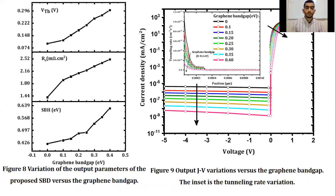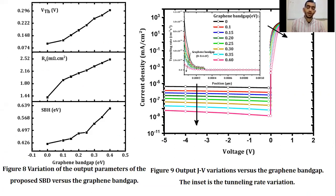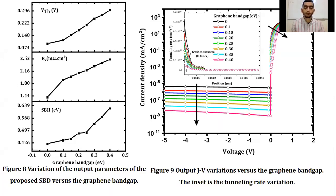Firstly, graphene bandgap was studied. When graphene bandgap increased, Schottky barrier height, series resistance, and threshold voltage increased, as presented in figure 8. And as presented in figure 9, when graphene bandgap increased, there was an increase in leakage current. These variations in Schottky barrier diode output parameters are related to a decrease in tunneling rate when graphene bandgap increased, as presented in the inset of figure 9.